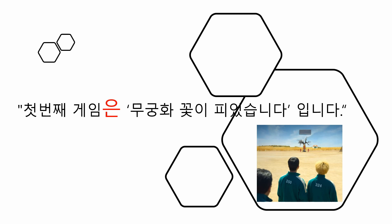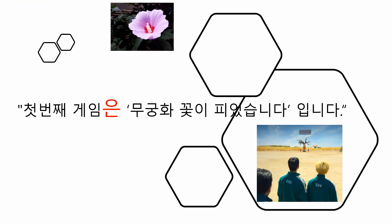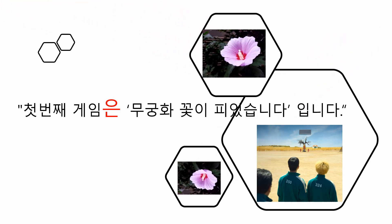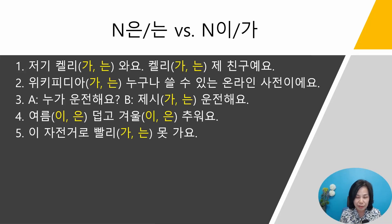첫 번째 게임은 무궁화 꽃이 피었습니다 입니다. The first game is 'the roses of Sharon have bloomed.' 무궁화 is the national flower. In episode 1, when the first game started, the 돌 영희 인형 explains the game like this. You might be wondering why 게임은 instead of 게임이, though it's new information. If you can answer the questions, you don't need to watch this video — if not, let's talk about it together at the end of class.